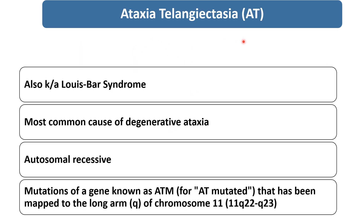In brief about ataxia telangiectasia: it is a chronic cerebellar degenerative disorder, also known as Louis-Bar syndrome. It is the most common cause of degenerative ataxia. It involves an autosomal recessive mutation of the ATM gene — AT mutated — which has been mapped to the long arm of chromosome 11.